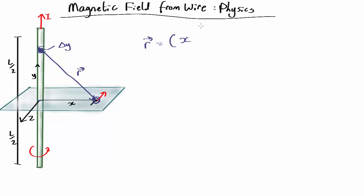Y coordinate is zero minus y, and z is zero minus zero. Okay, so that is our r vector.